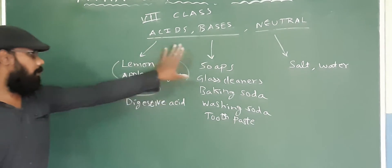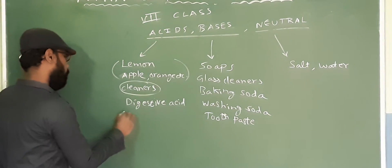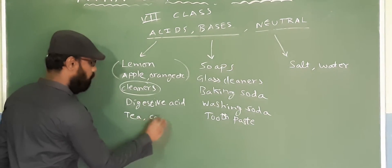These are the examples to identify acids and bases. Even tea and coffee, those are also acids.